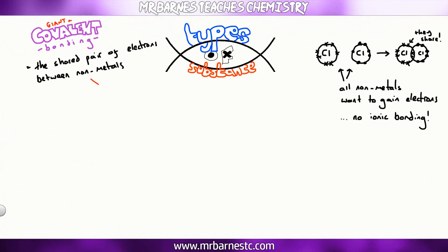Giant covalent structures have lots of strong covalent bonds — bearing in mind simple covalent only had a few, we've got a lot of covalent bonds here. This gives every giant covalent compound high melting points because lots of energy is needed to break those strong covalent bonds.